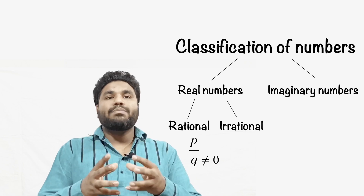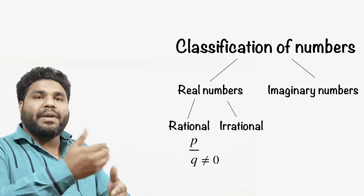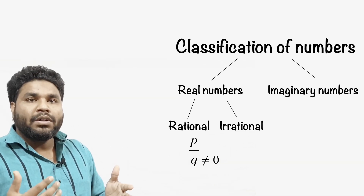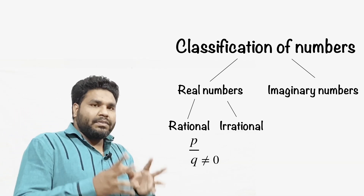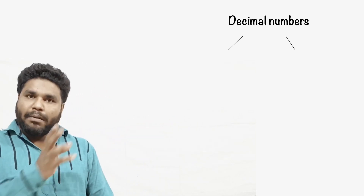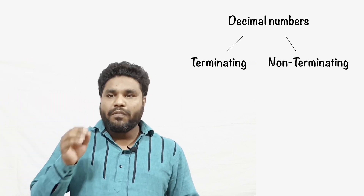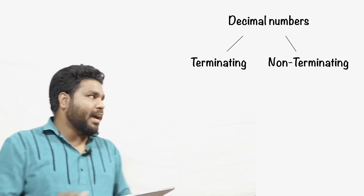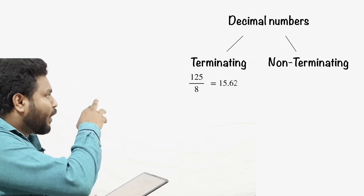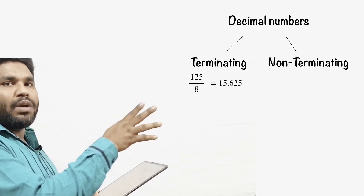To understand rational numbers better, we need to understand decimal numbers first, because some decimal numbers can be expressed in the form of p/q where q ≠ 0. Decimal numbers are of two types: the first is terminating numbers and the second is non-terminating numbers. Terminating numbers are those which have an end. For example, 125 divided by 8 gives 15.625 — after 5 there is no further digit and the remainder is 0.